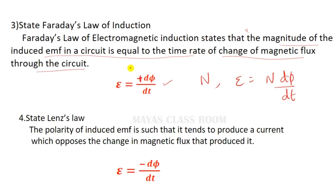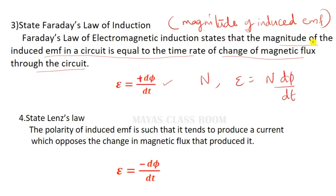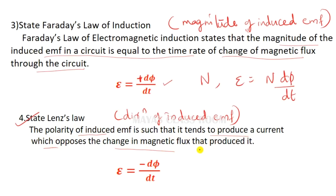That is the magnitude of the induced EMF according to Faraday's first law. The second law — Lenz's law — states that the polarity of the induced EMF is such that it tends to produce a current which opposes the change in magnetic flux that produces it.